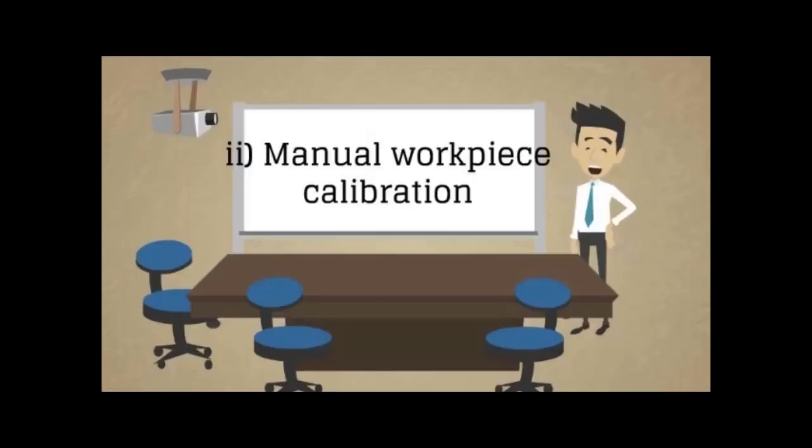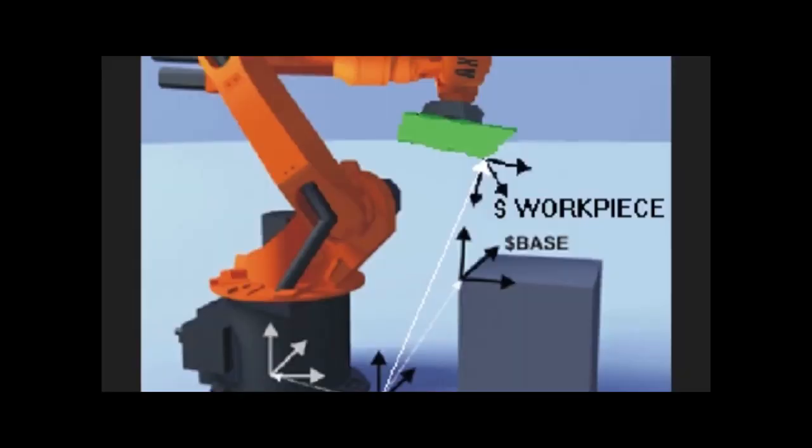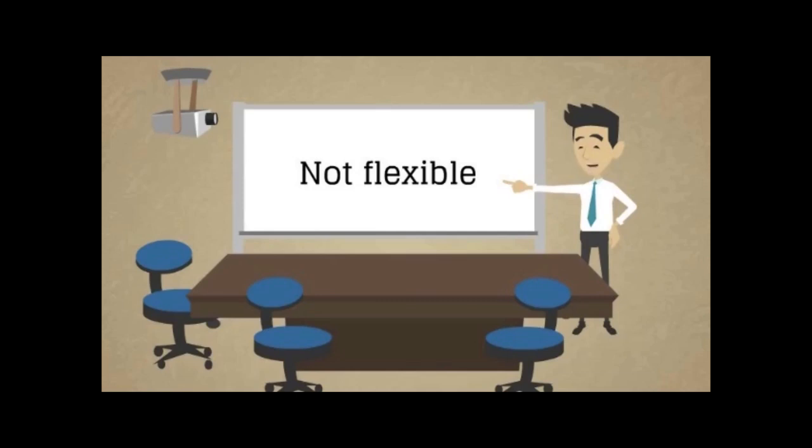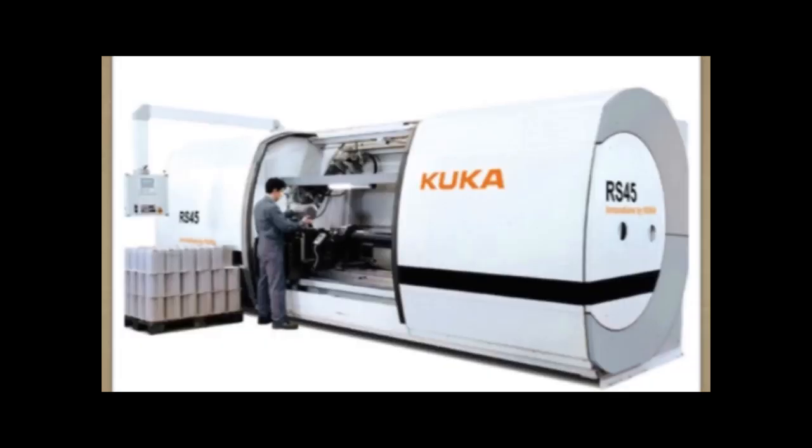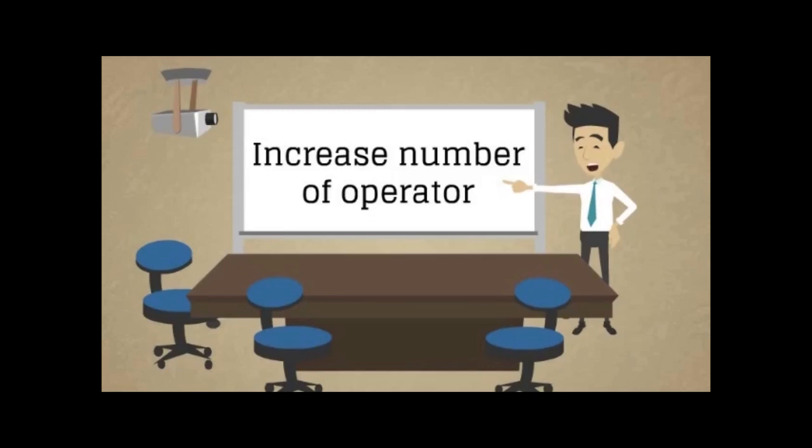The next positioning method is manual workpiece calibration system. Manual workpiece calibration is a positioning method requiring an operator to teach the robot's arm to move the workpiece to a reference point. By doing this, the robot controller can calibrate and calculate the position of the workpiece. The problem of using this positioning method is first, it is not flexible. Because operator needs to manually calibrate the workpiece for every changing of the workpiece, it increases the number of operators. As a result, it increases the operating costs.